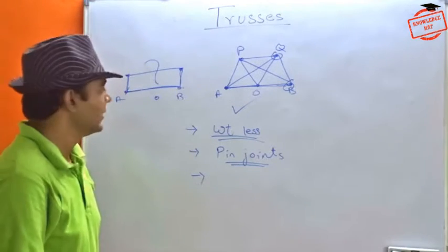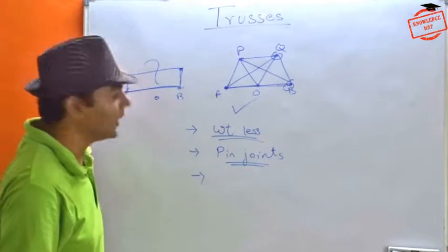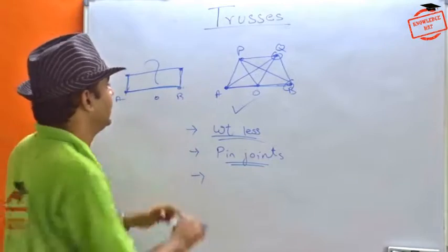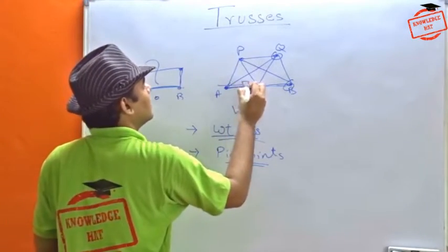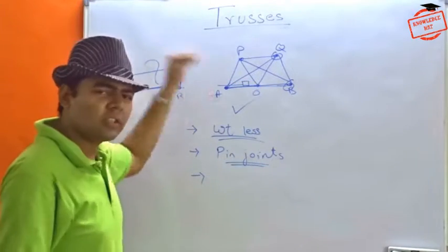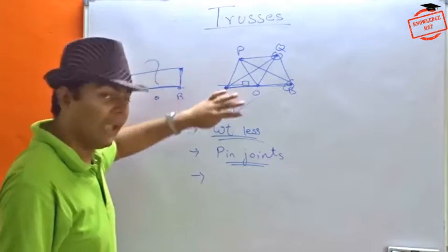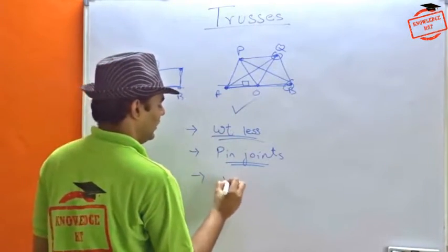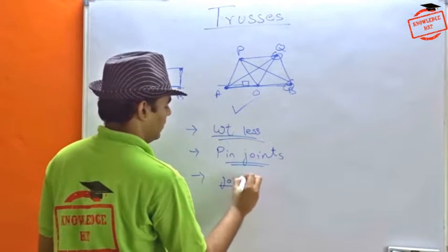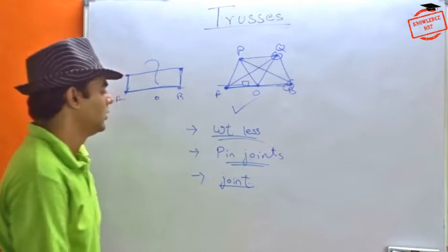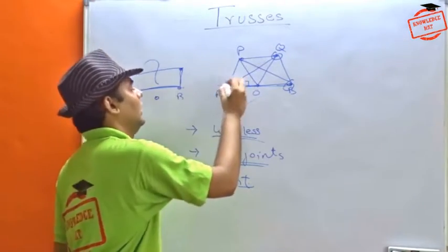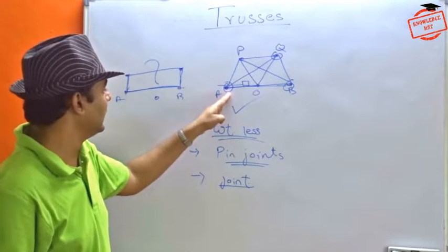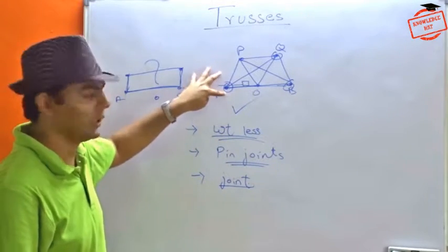The next thing is, any external force that is acting on it, let it be wind or if there's a vehicle going through this. The force exerted by any external factors is always acting at the joint. So the joint is, in our calculation also, the joint will play a very important role. So we will do all the calculations related to our joints.